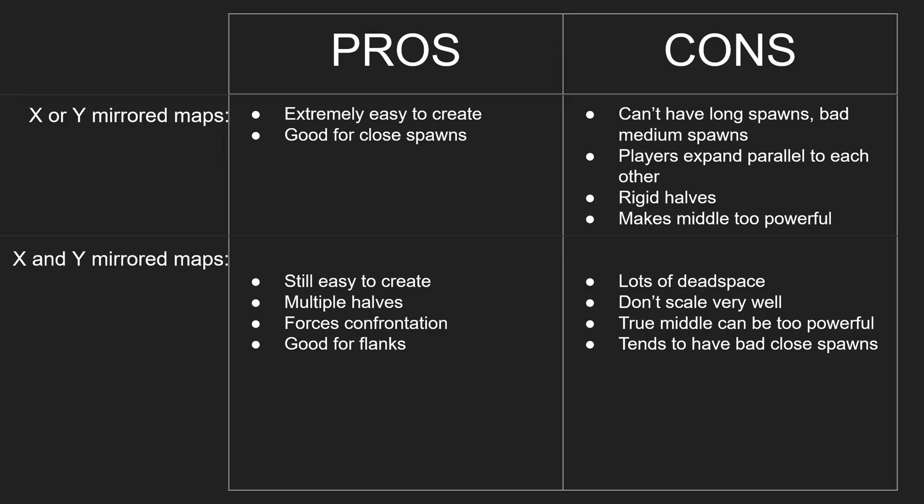Maps that are XY mirrored are still pretty easy to create. You can have multiple types of halves — as shown with Malevolence, there's not one clear way to split the map depending on which way a player wants to go. These maps also force confrontation since you're usually expanding toward an opponent's base. They're really good for flanks because it's easy to get lost and you don't have that clear defined half like you do on single-axis maps.